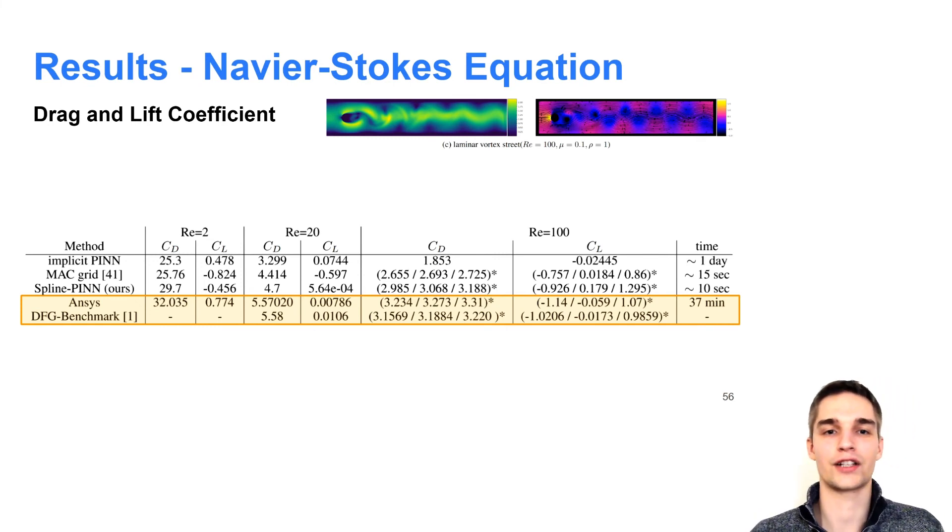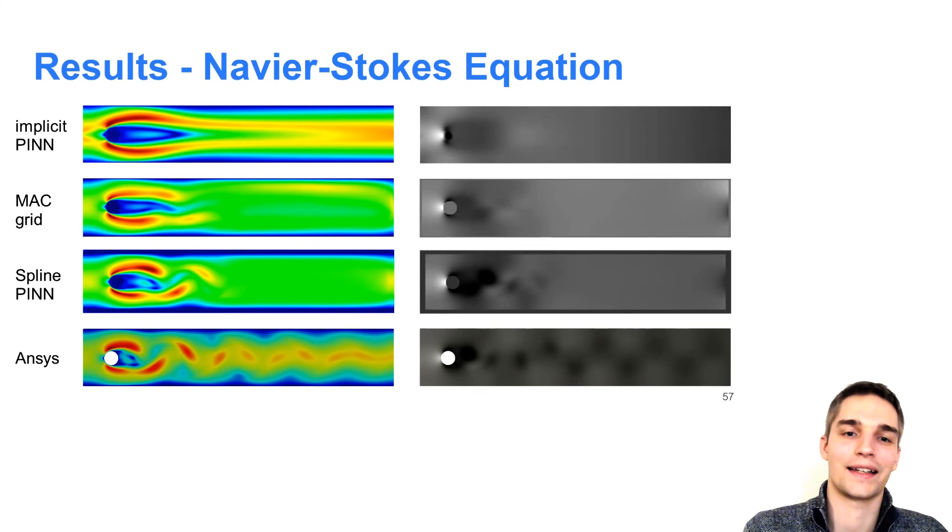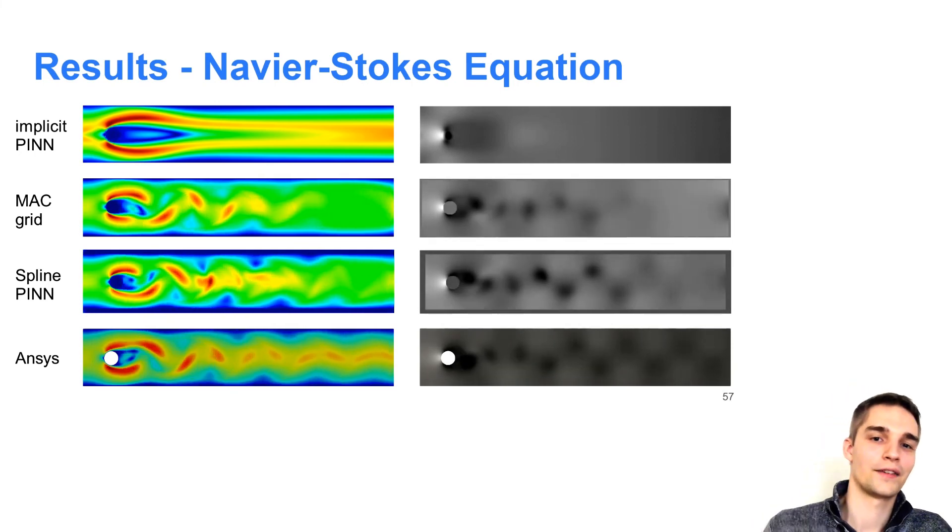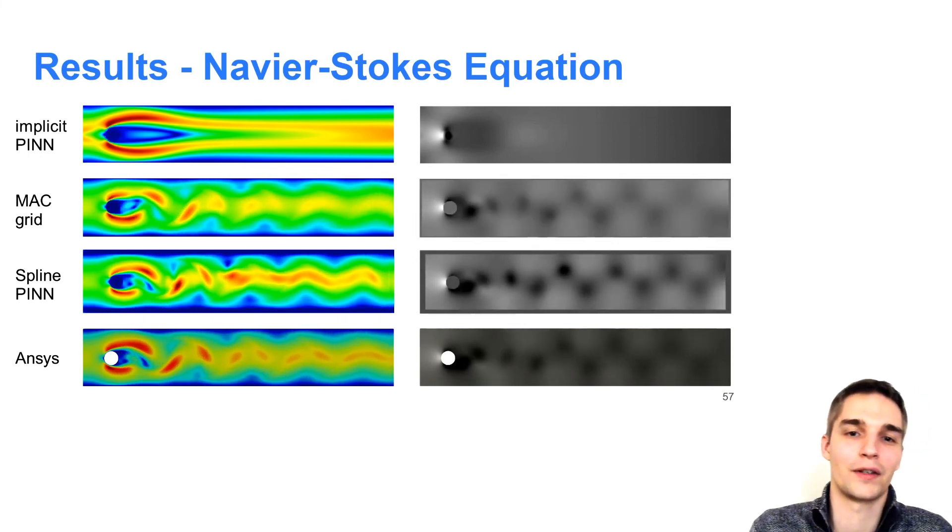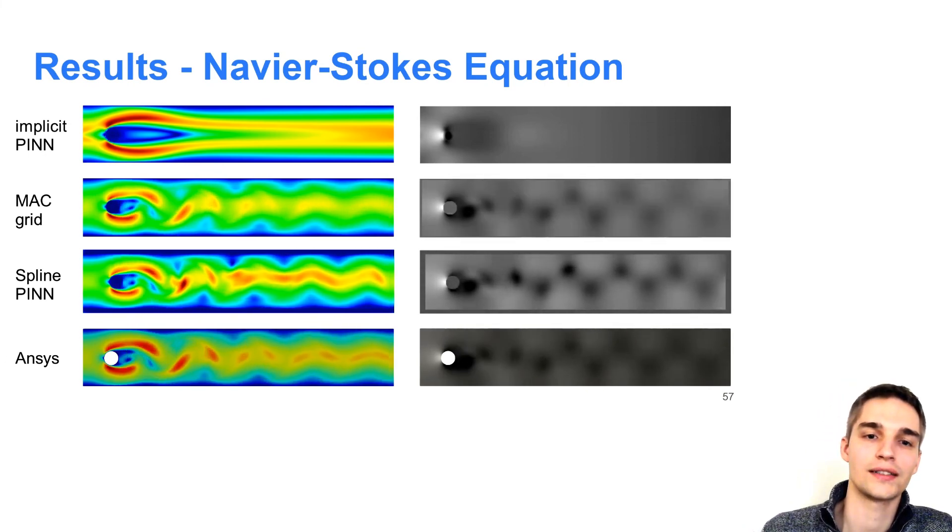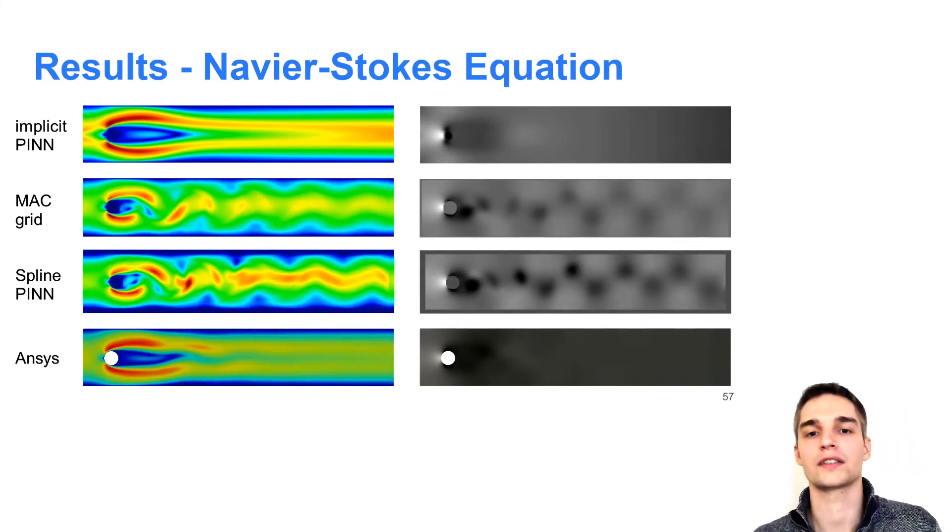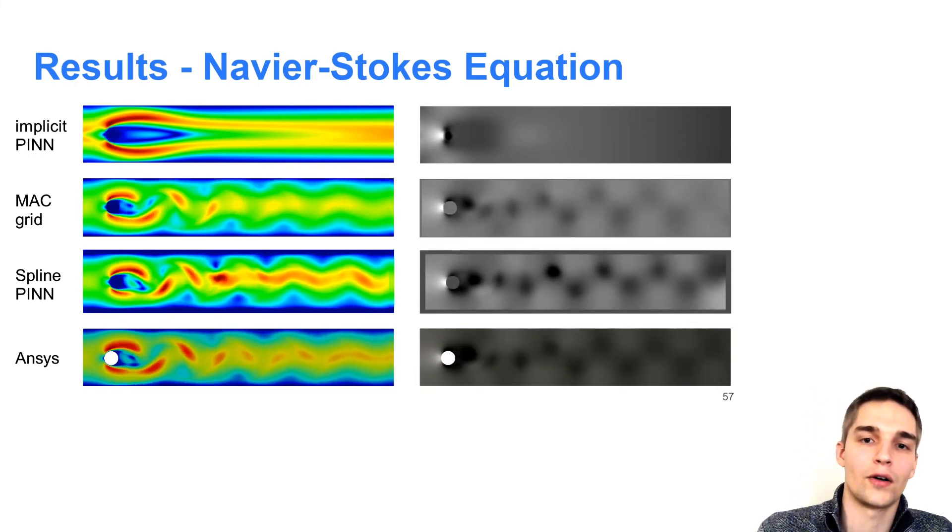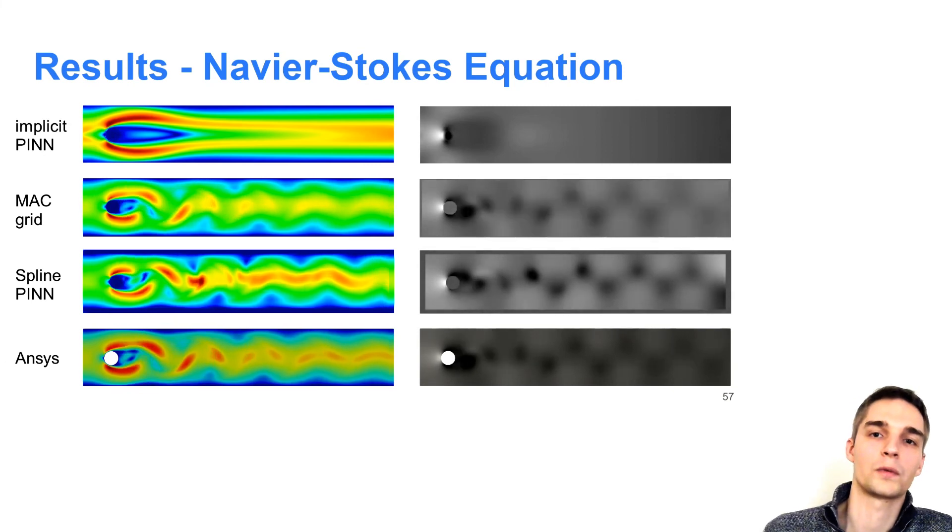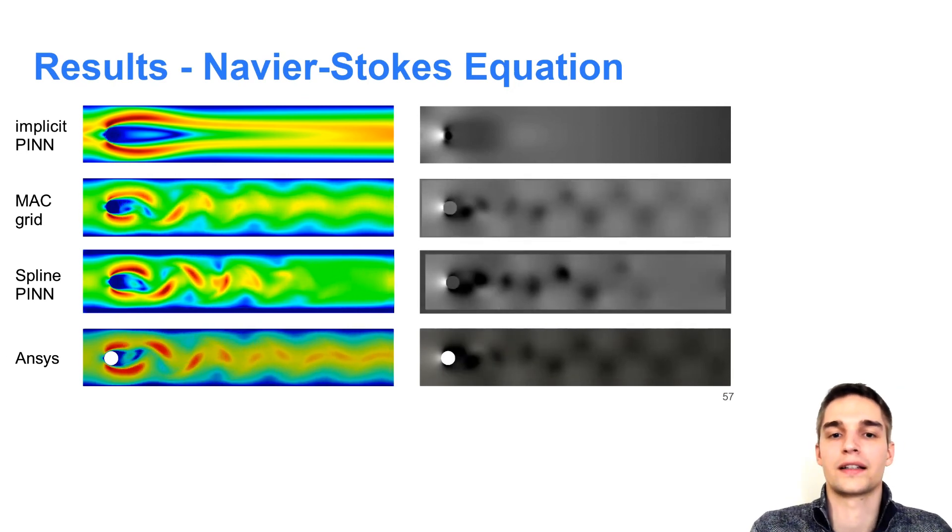Since the implicit PIN doesn't generalize to new domains, we had to retrain it entirely, which took about one day. Here we show a qualitative comparison of an implicit PIN, the marker and cell grid approach, our spline PIN method, and ANSYS at Reynolds 100. Note that we didn't manage to learn the oscillating von Kármán vortex street behavior with the implicit PIN. We believe this is because we gave our networks only information about the Dirichlet boundary conditions, while other works that used implicit PINs for the incompressible Navier-Stokes equation feed the neural networks also with simulated data, either directly or through boundary conditions. And this is not what we want here. The results of the marker and cell grid approach and spline PIN approach, however, match well qualitatively with the reference simulation.